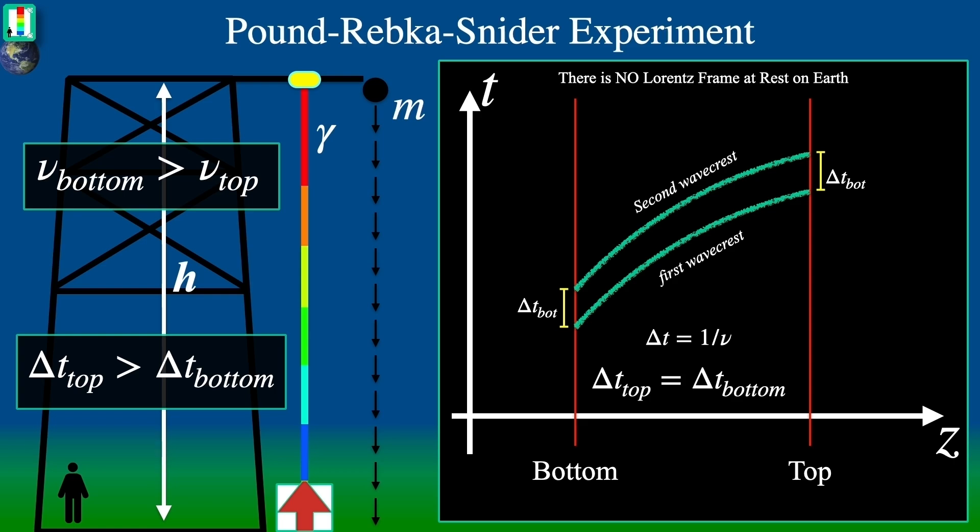This begs the question, is there a setup on Earth where the redshift will not occur? That is, can we use a special relativistic Lorentz inertial frame on Earth? Let's see if we can find such a frame. First, let's pretend initially that one does in fact exist. To help us, we use a special relativistic spacetime diagram.